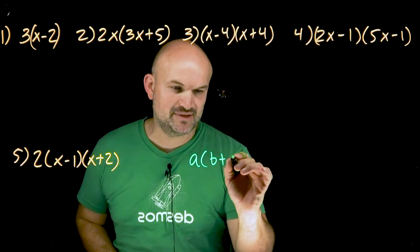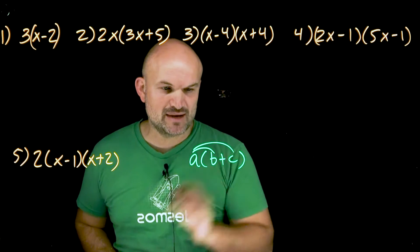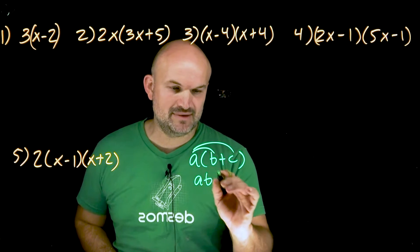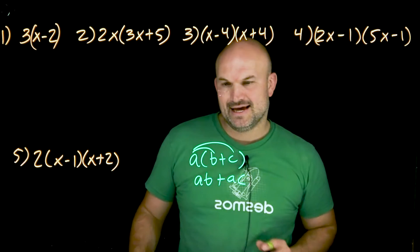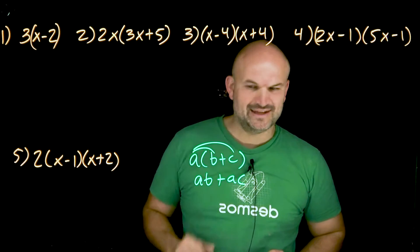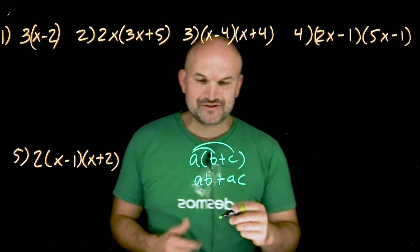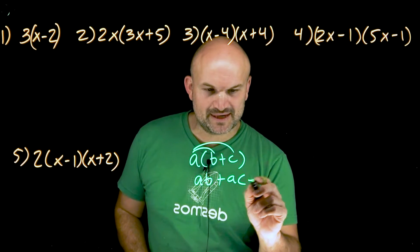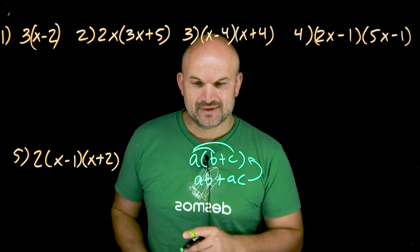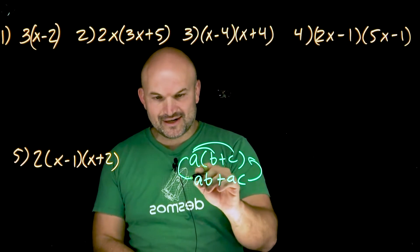If I have A times B plus C, remember this A needs to multiply by the B and the C. So this would be AB plus AC. And then furthermore, what I want you to see here is factoring is basically the process of going from here to there. So we're going to practice going from here to here.